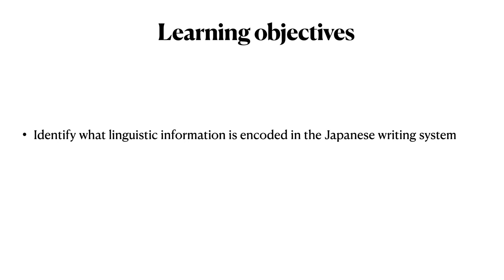Let's take a moment and identify the learning objective for this recording. This recording corresponds to content in sections 3.2 and 3.1 in chapter 3 of the textbook, Language, Technology and Society by Richard Sprout. After reading that material and watching this video, you should be able to identify the major components of the Japanese writing system and describe how linguistic information is encoded using each of those components.